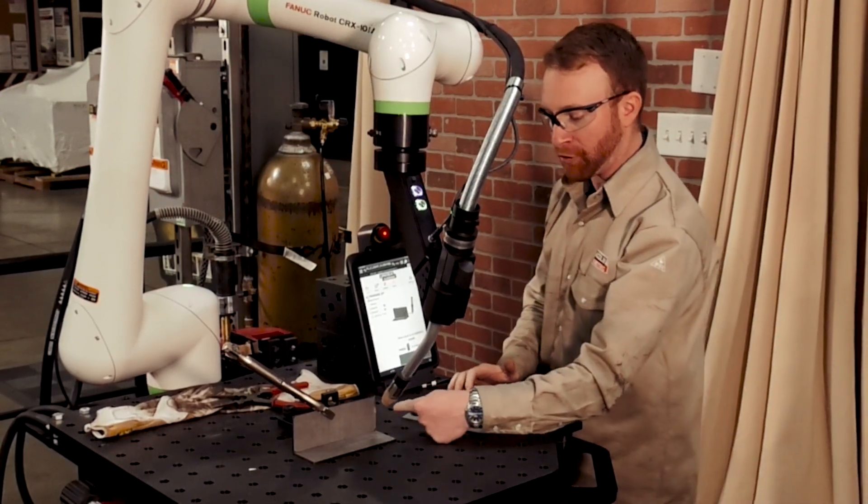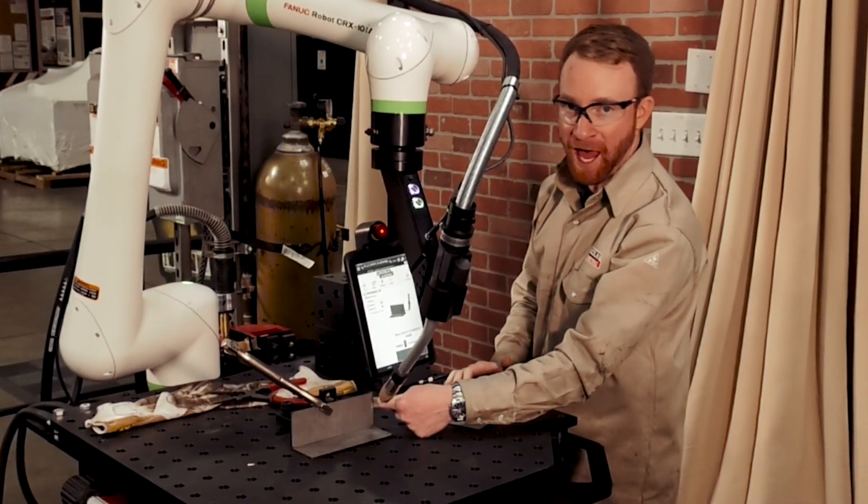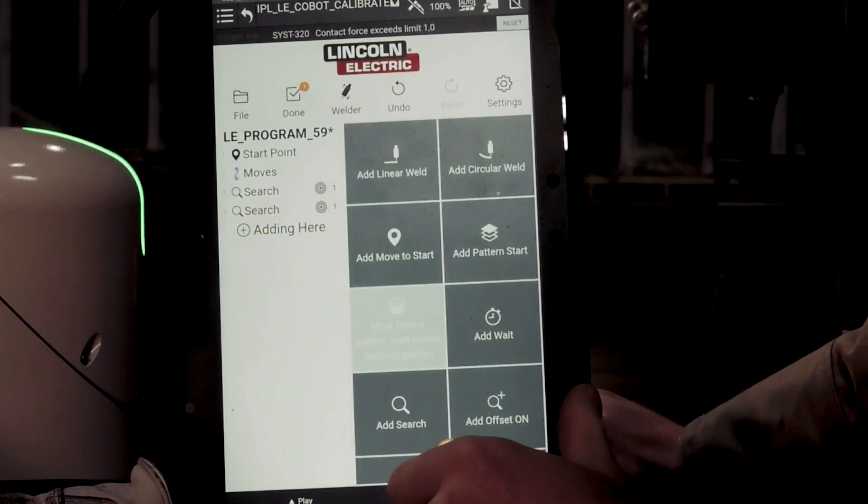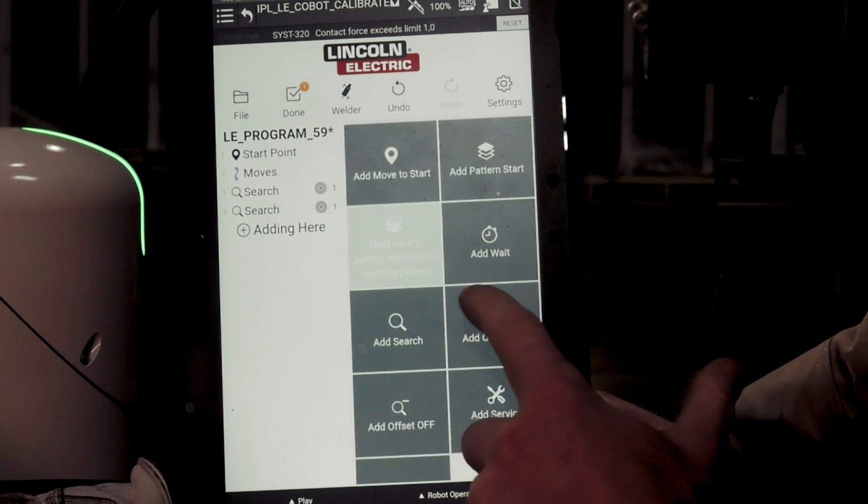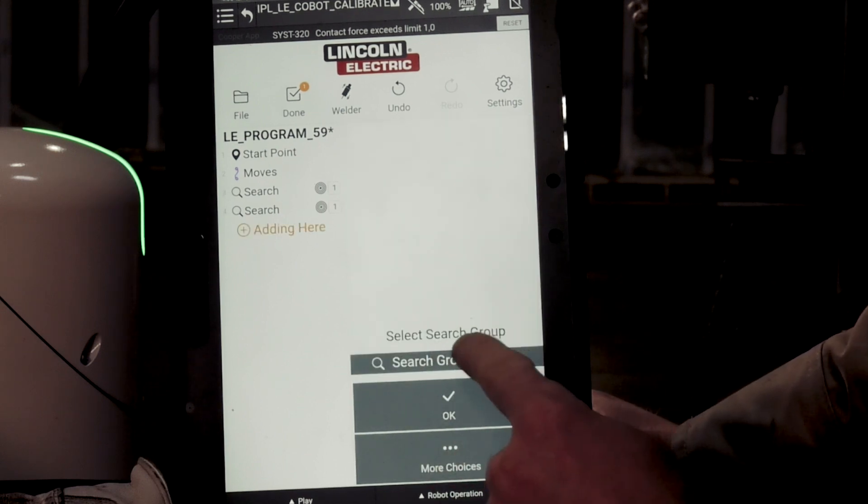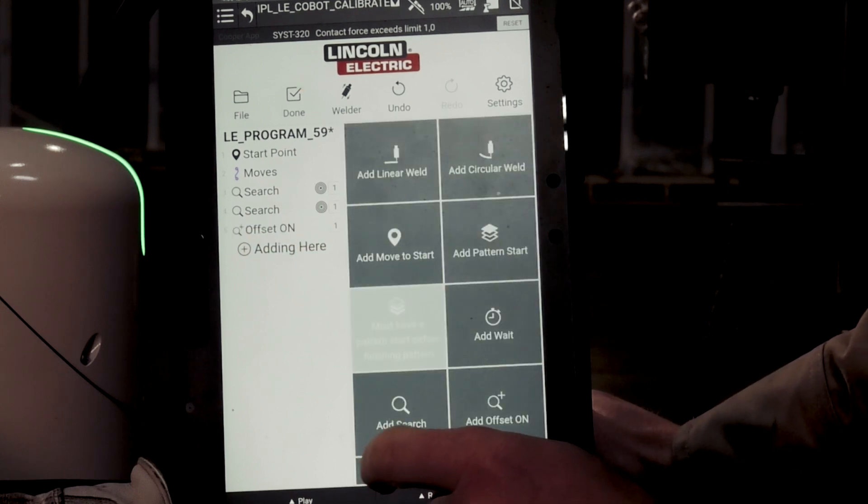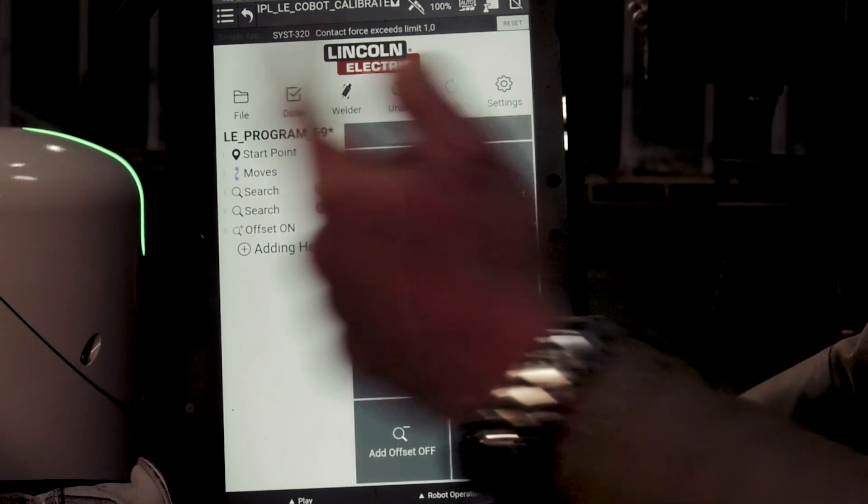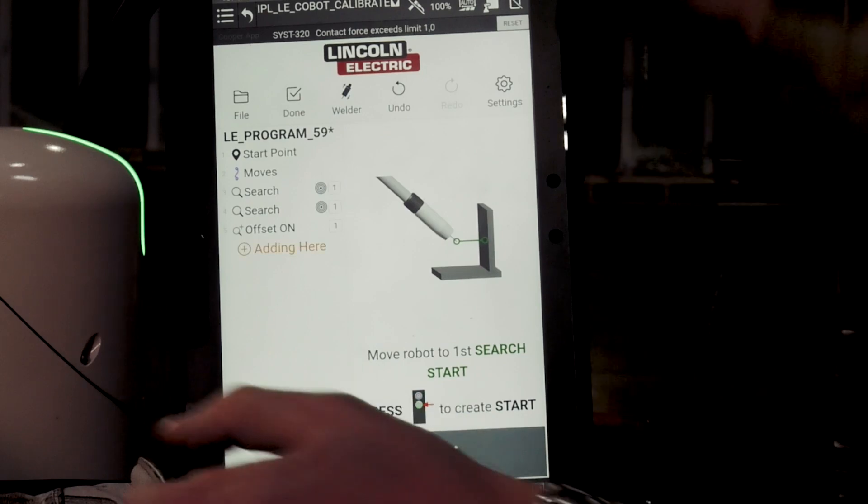Now if you wanted to you could do a third location, so you could come from this edge, but we're not going to be doing that here. So we're just going to go to more choices and then add offset on. From here it's going to ask search group one. We're going to press okay. Perfect. Now we're going to add another search on the other end to make sure that we're getting a good angle on both sides.